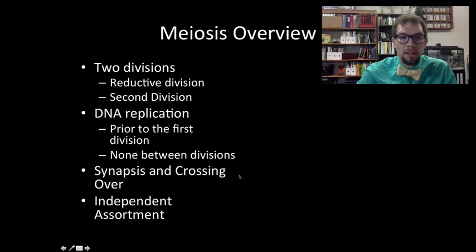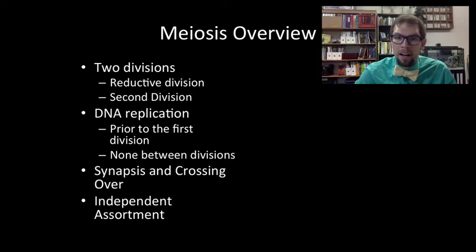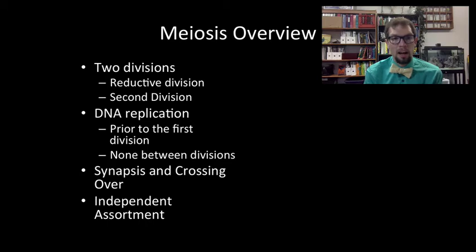Something unique to meiosis is the phenomenon of synapsis, where the homologous pairs of chromosomes actually align, and then crossing over occurs where they actually swap genetic information. The other important phenomenon is independent assortment — how the different homologs align is going to be independent of how the other homologs align.